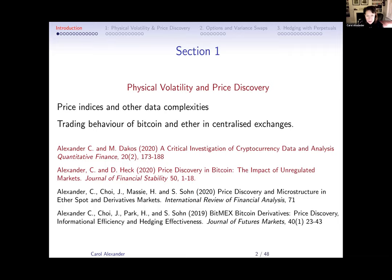I'll be talking about a couple of already published papers. One is in Quantitative Finance with Michael Dacos, my fourth-year PhD student. The second is with Daniel Heck, just started his second year, and that's just come out in the Journal of Financial Stability. There are a few other papers on price discovery and microstructure with co-authors at Peking University and a master's student, Hamish Massey.